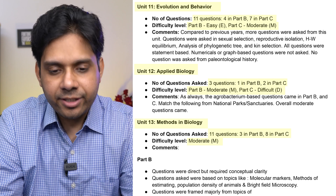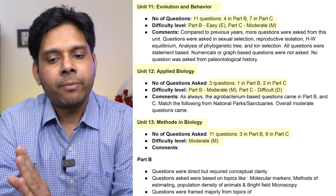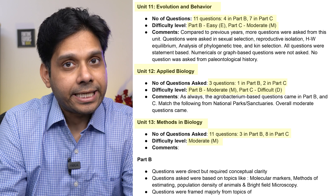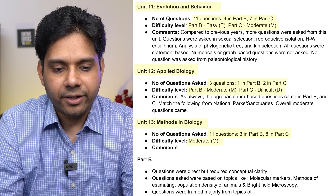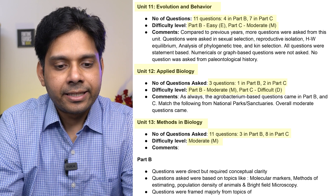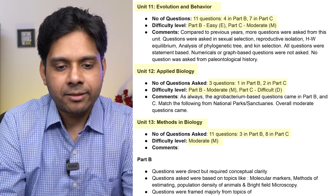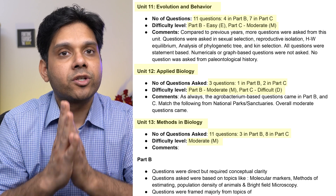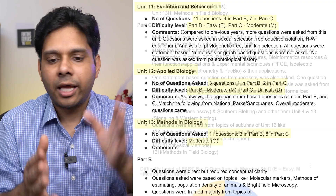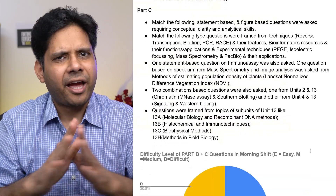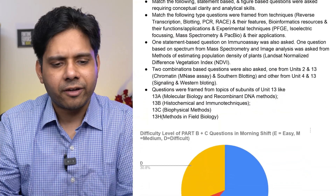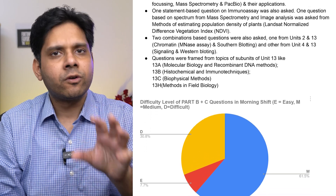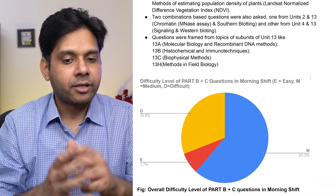I missed Unit 11 — Evolution and Behavior — so let me cover that now. Unit 11 had 11 questions: four in Part B and seven in Part C, so you should not miss it. Part B was easy and Part C was moderate. Unit 13, Methods in Biology, had a huge number — 11 questions: three in Part B and eight in Part C. Difficulty level was moderate.